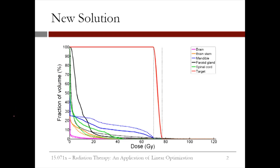If we solve our problem with this new objective, we get the solution shown in this figure. The dose to the tumor, shown as the red line, does not change — it still stays within the constraints we've defined. For each of the critical structures, the previous solution is shown as a dotted line, and the new weighted solution as a solid line. We can see that the dose to the mandible, shown in blue, has significantly decreased.